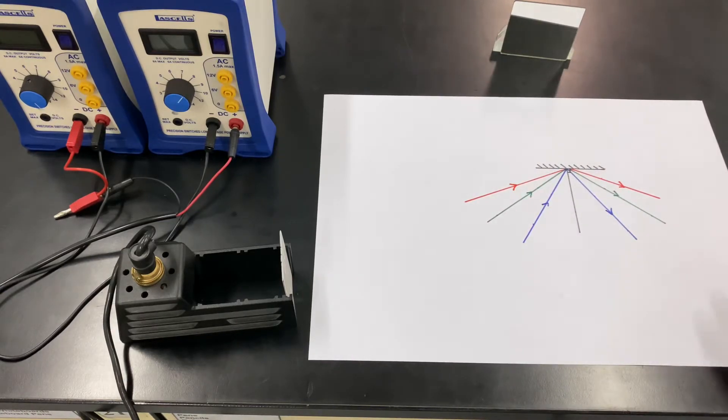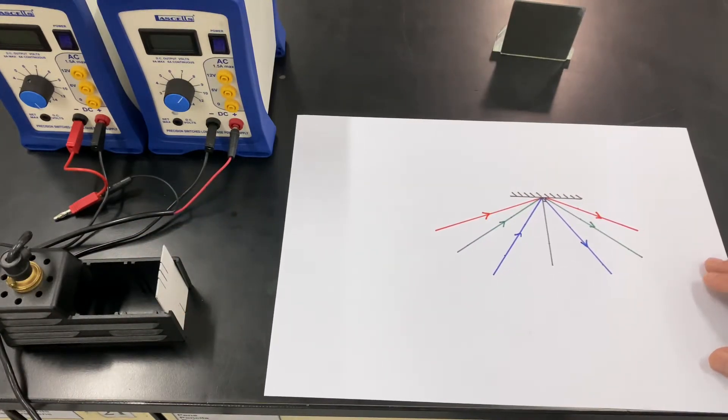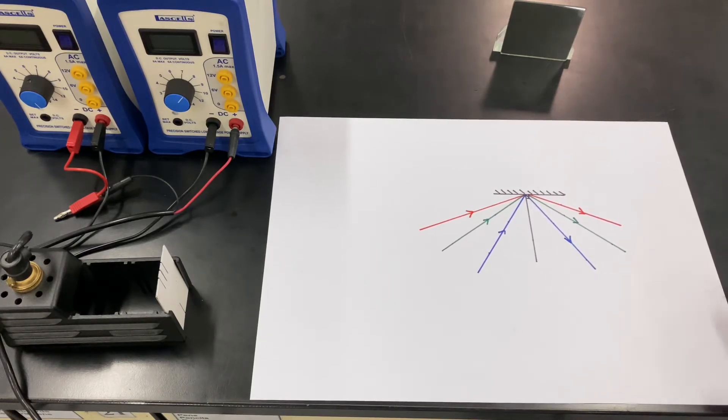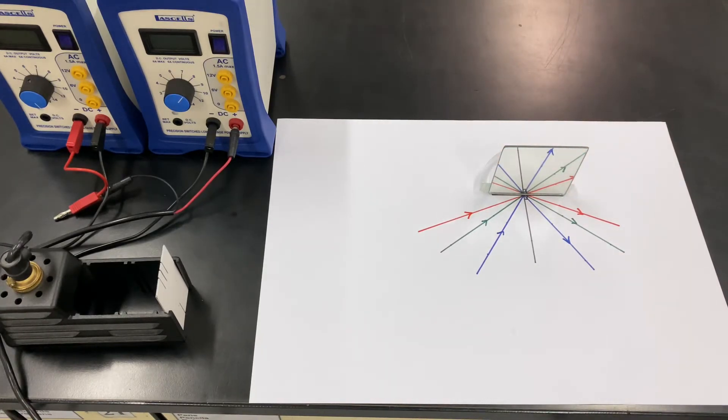So hopefully you can see there that the law of reflection is true. So the angle of incidence is equal to the angle of reflection at a plane mirror. Okay, so what are the angles here? Which ones are they?